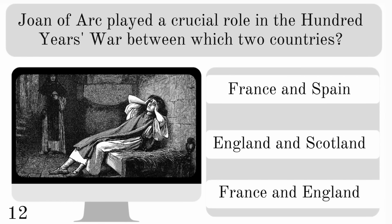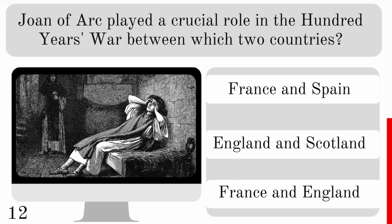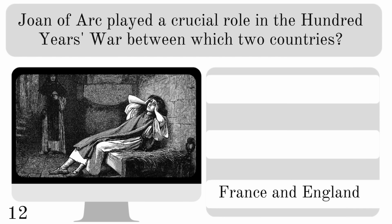Joan of Arc played a crucial role in the Hundred Years War between which two countries? France and Spain, England and Scotland or France and England? And the answer is France and England.